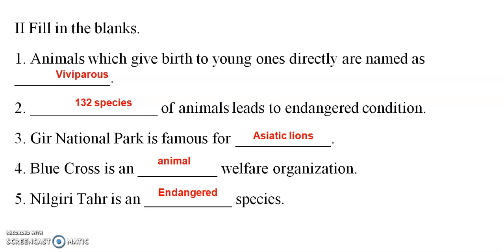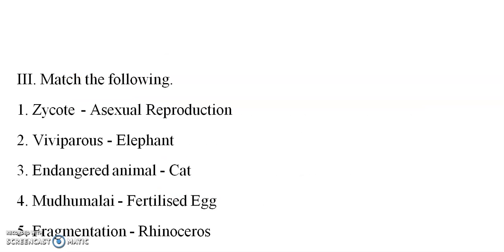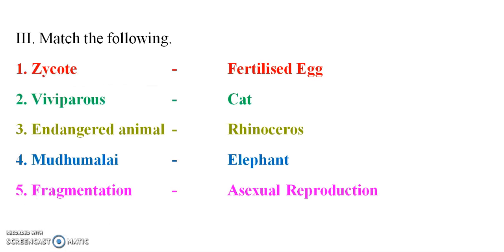The natal grietar is in blank — endangered species. Match the following: fertilized egg, viviparous cat, endangered animal — these are to be matched accordingly.